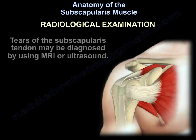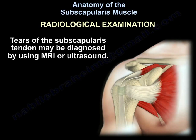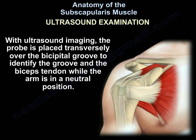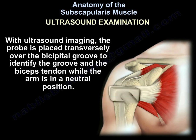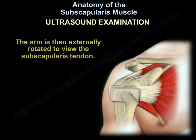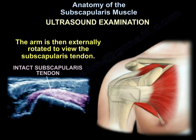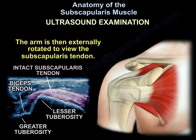Radiological examination. Tears of the subscapularis tendon may be diagnosed by using MRI or ultrasound. With ultrasound imaging, the probe is placed transversely over the bicipital groove to identify the groove and the biceps tendon while the arm is in a neutral position. The arm is then extended and rotated to view the subscapularis tendon.